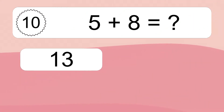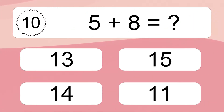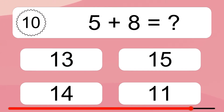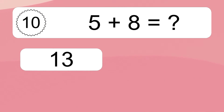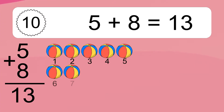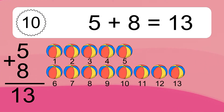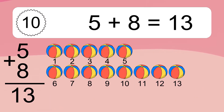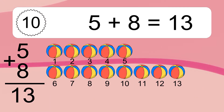5 plus 9 equals 14. Let's count it. 1, 2, 3, 4, 5, 6, 7, 8, 9, 10, 11, 12, 13.